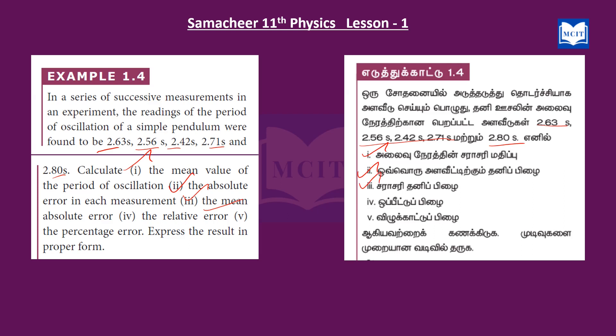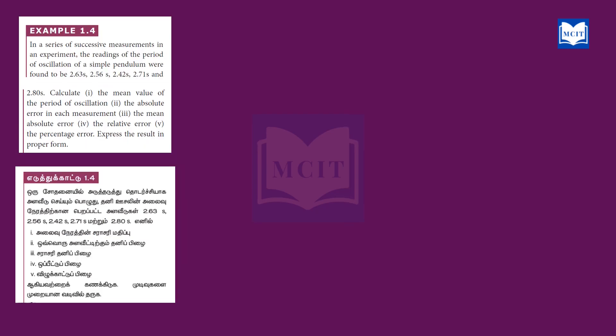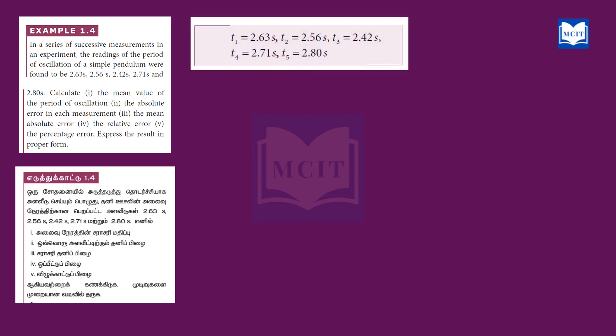Fourth, the relative error. Fifth, the percentage error. We have to solve these five subdivisions. First we note the time readings as T1, T2, T3, T4, and T5.